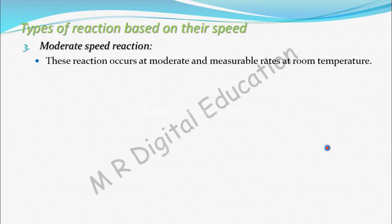Now moderate speed reactions. This speed is in between very slow and very fast. These reactions occur at moderate and measurable rates at room temperature. And for these reactions, study of kinetics is simple. In this chapter, we deal with moderate speed reactions only.